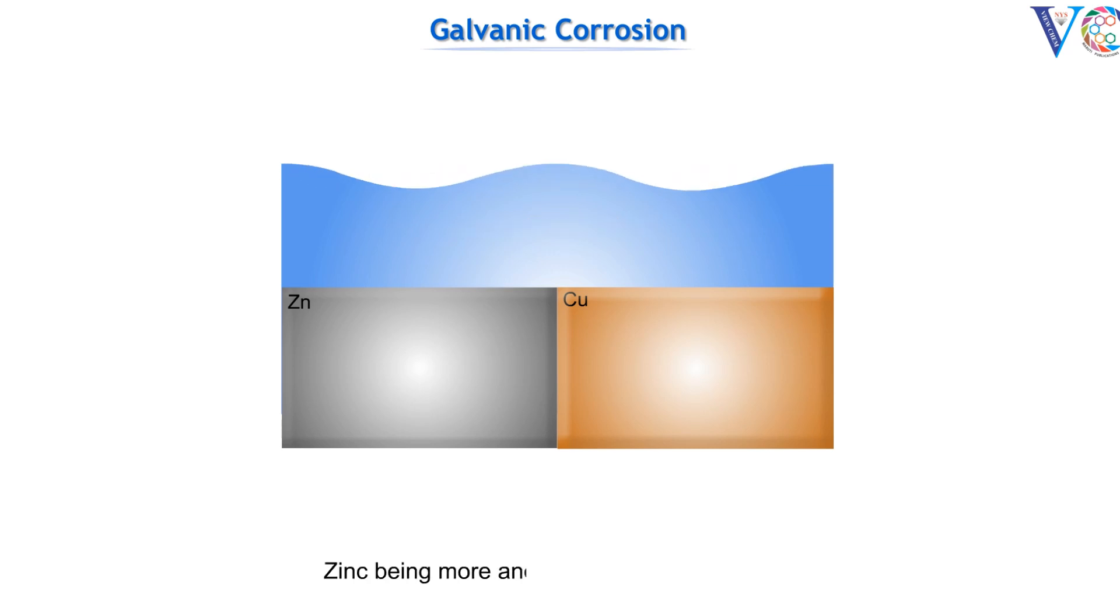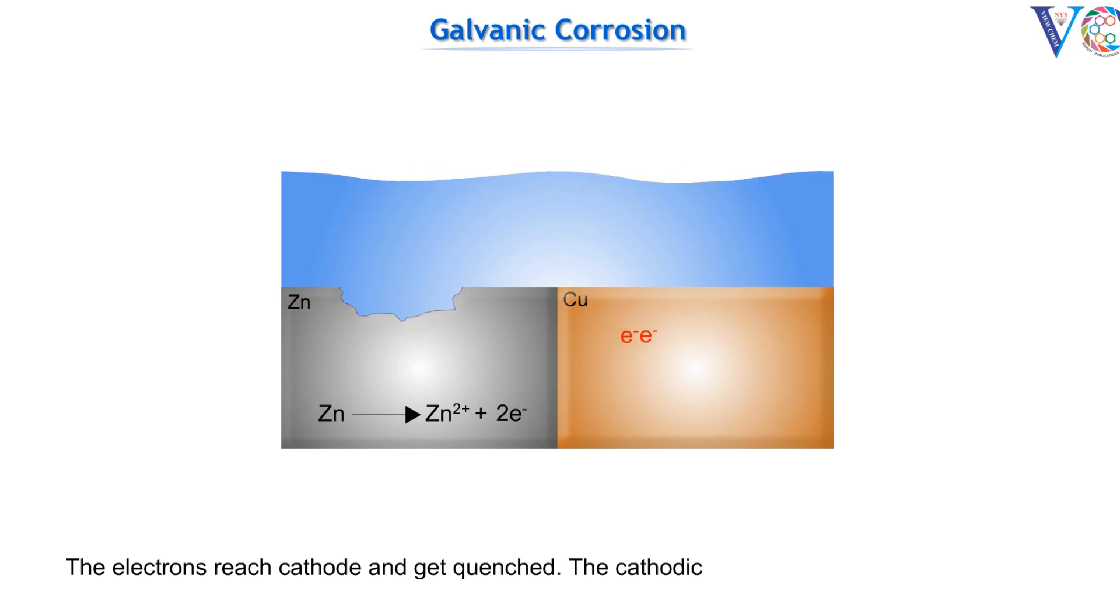Zinc being more anodic, undergoes oxidation. The electrons reach cathode and get quenched. The cathodic reaction depends on the nature of the corroding medium.